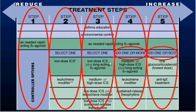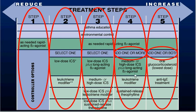In step three, low-dose ICS plus LABA — long-acting beta-2 agonist like salmeterol or formoterol. Alternatively, medium or high dose of inhaled corticosteroids, or low-dose ICS plus leukotriene modifier, or low-dose ICS plus sustained-release theophylline — but the better choice is ICS plus long-acting beta-2 agonist. For step four, add one or more of: medium or high-dose ICS plus long-acting beta-2 agonist, leukotriene modifier, or sustained-release theophylline. For very severe uncontrolled asthma, oral corticosteroids in the lowest dose maintained for a few weeks, then slowly taper down.